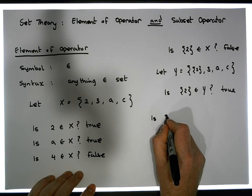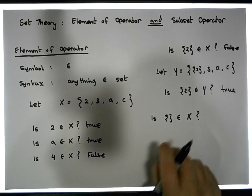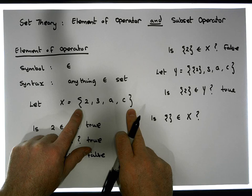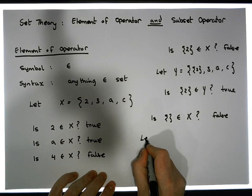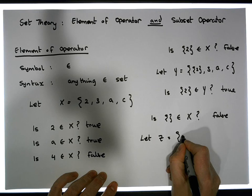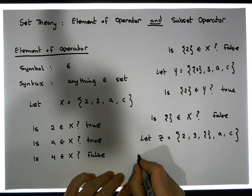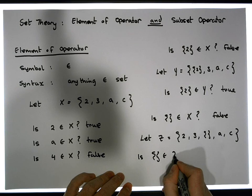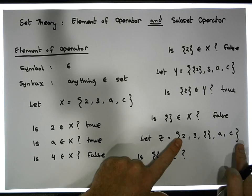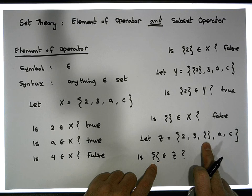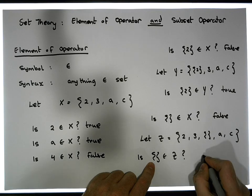Is the empty set an element of set X? Well, if the empty set were an element of X, it would be listed inside X, which it clearly isn't, so this is false. Now let's define another set: let Z equal the set containing the values 2, 3, the empty set, a, and c. Now: is the empty set an element of Z? In this case, for something to be an element, what's on the left must be listed within the set. The empty set is listed in Z — it is a member, it actually contributes to its cardinality. So in this case, this is true.